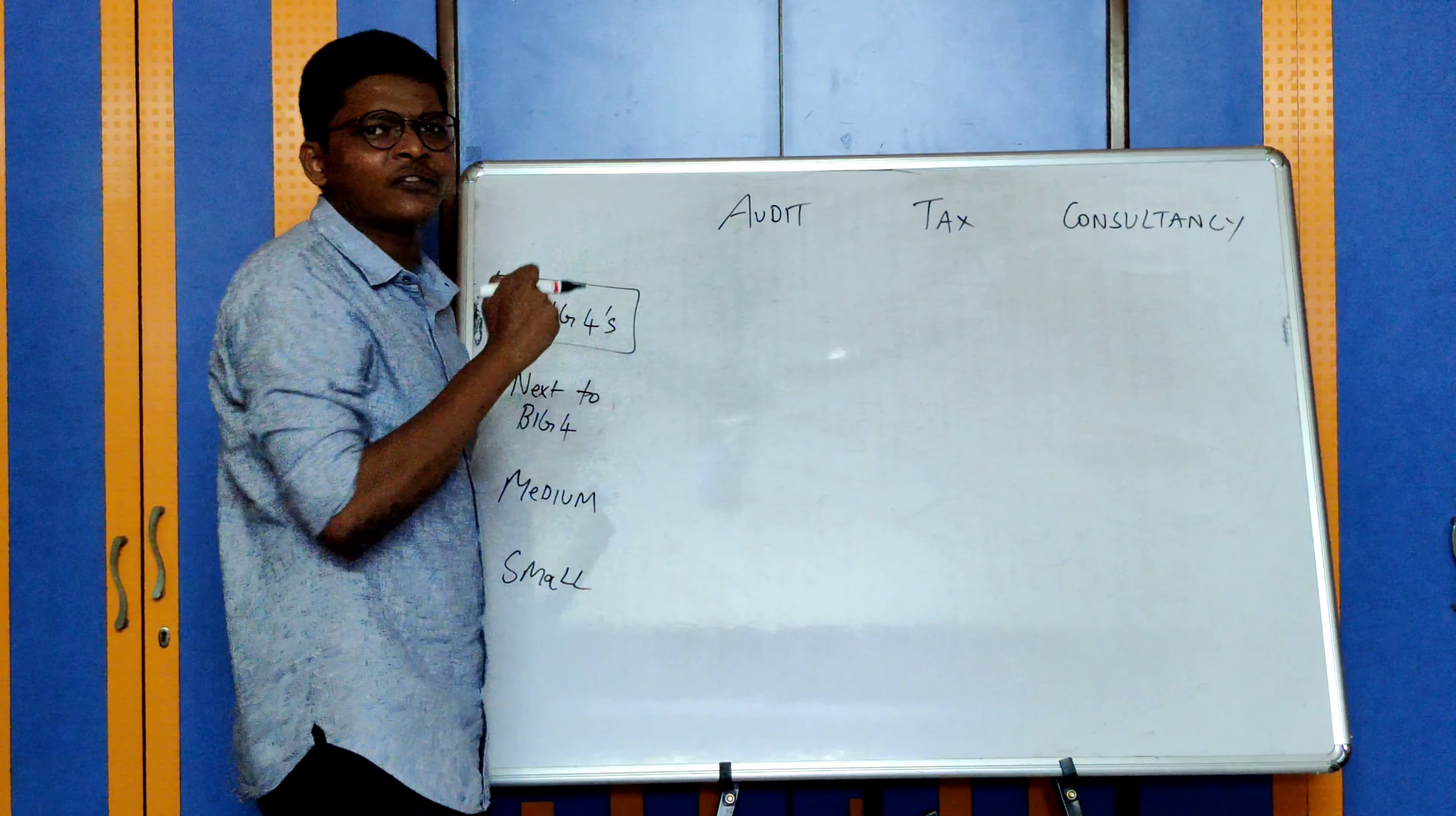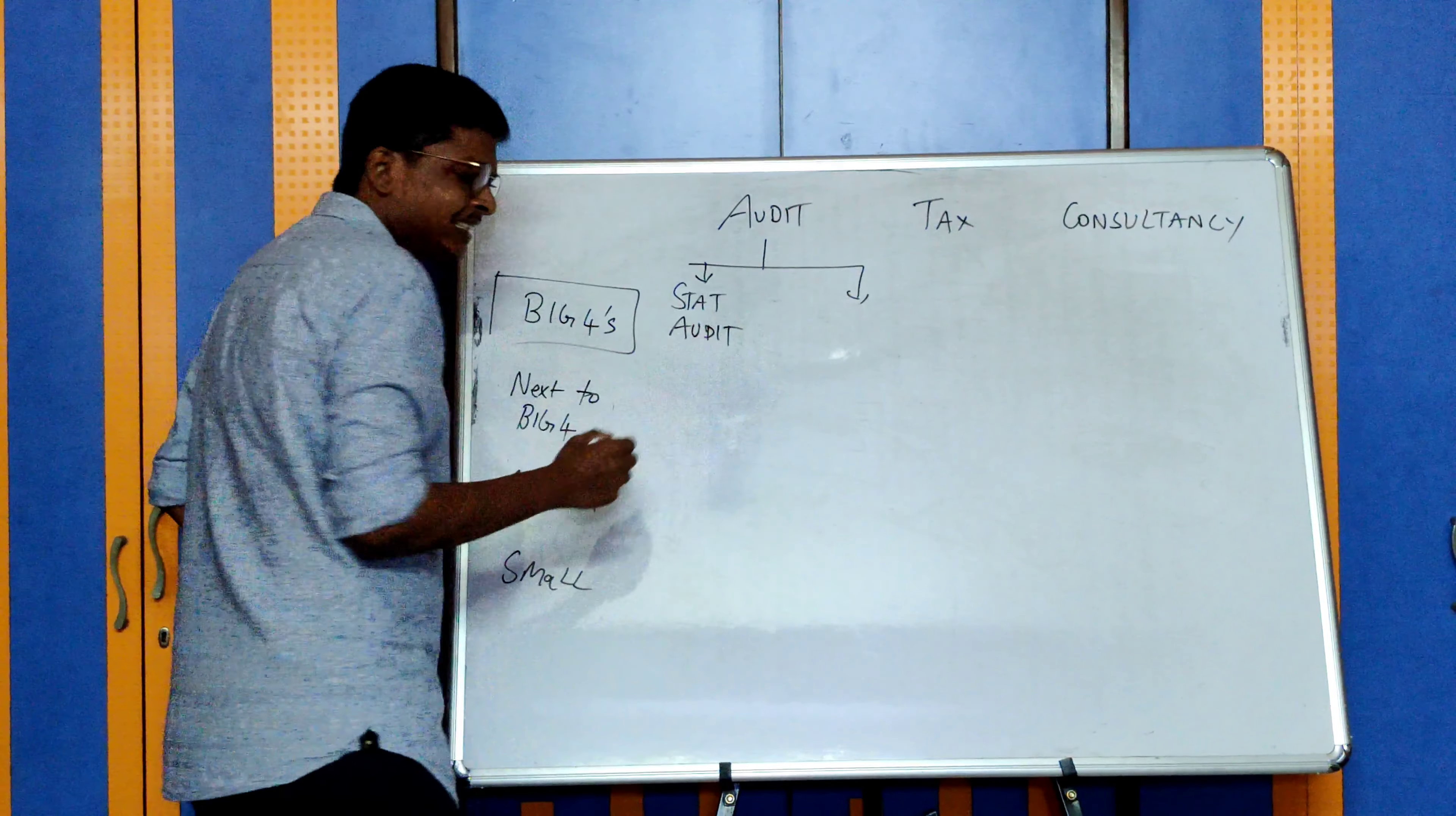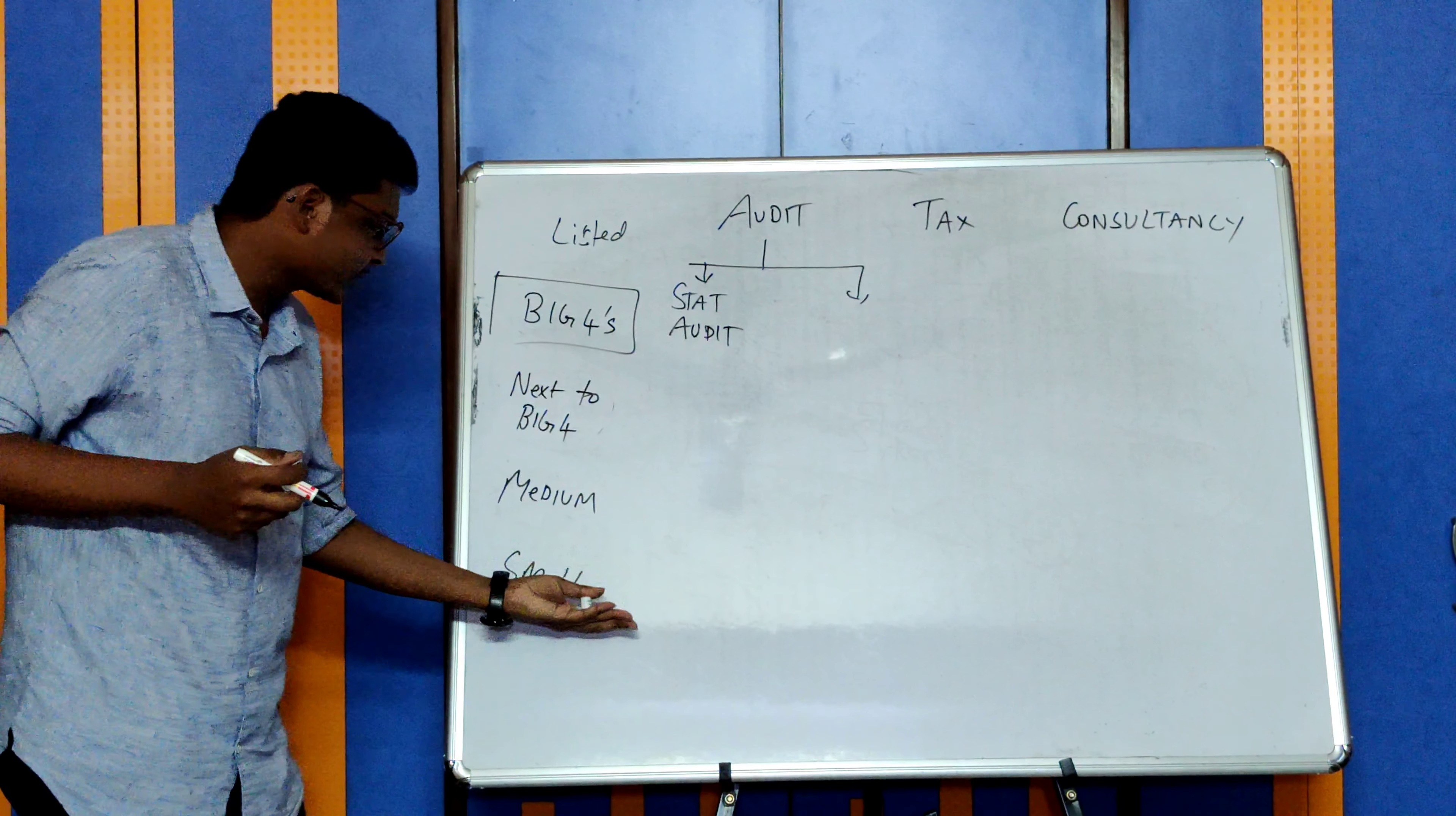Big Four provide audit - a significant amount of their revenue comes from statutory audit. This is available across all firms, but what differs is the size of the audit. In a Big Four or next to Big Four type of firm, you will get listed audits of big companies with huge numbers. You will do the same audit process in a small or medium firm, but the chance of getting exposed to a listed company audit is less.